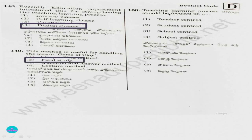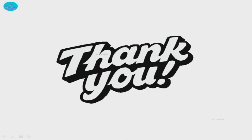Question 150. Teaching-learning process always should be focused on: 1) teacher-centered, 2) student-centered, 3) school-centered, 4) subject-centered. As we have seen, everything should be child-centered. So answer is option 2, student-centered. By this we have completed the 30 questions of EVS. Thank you.